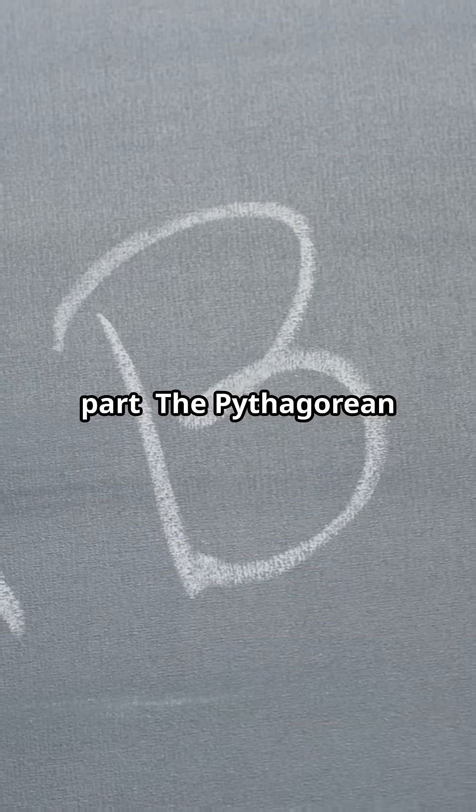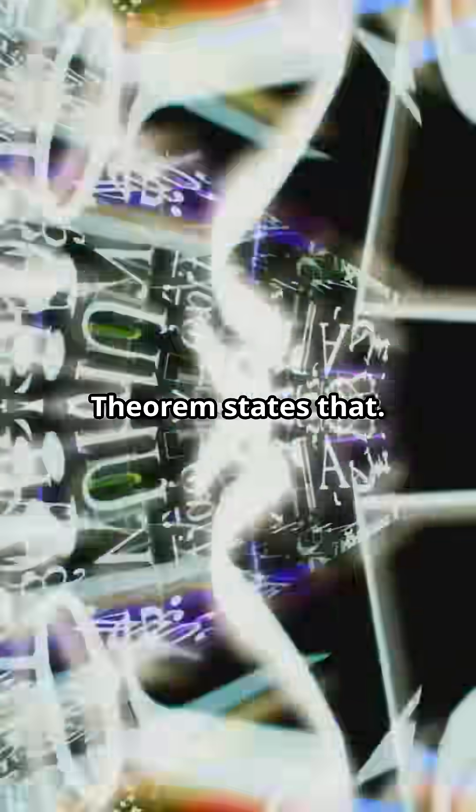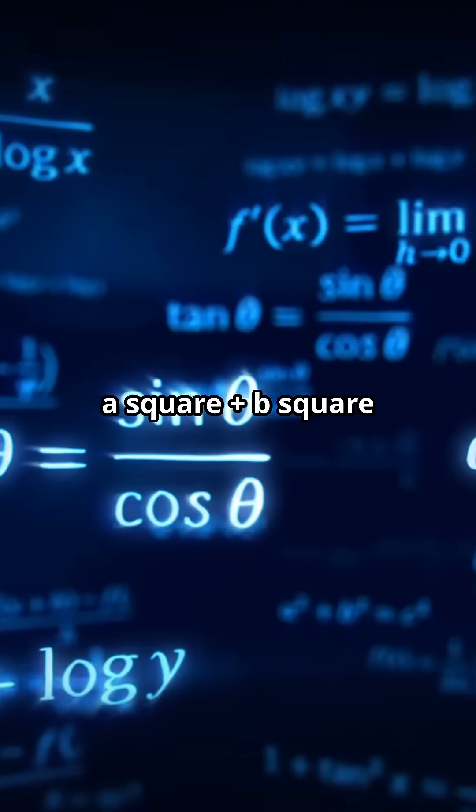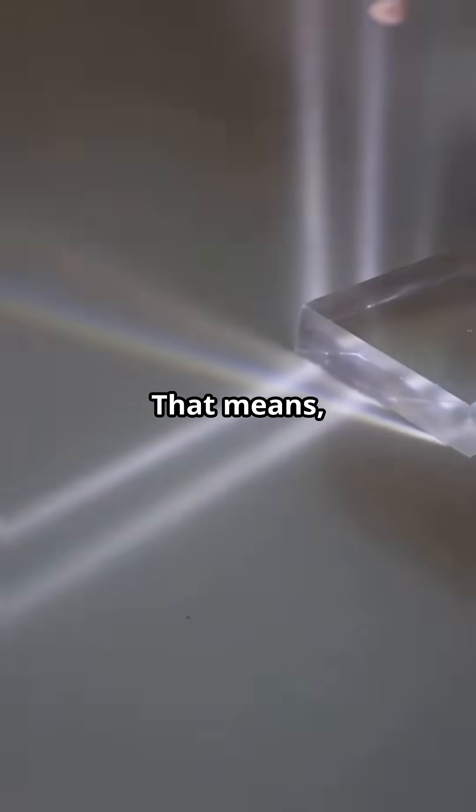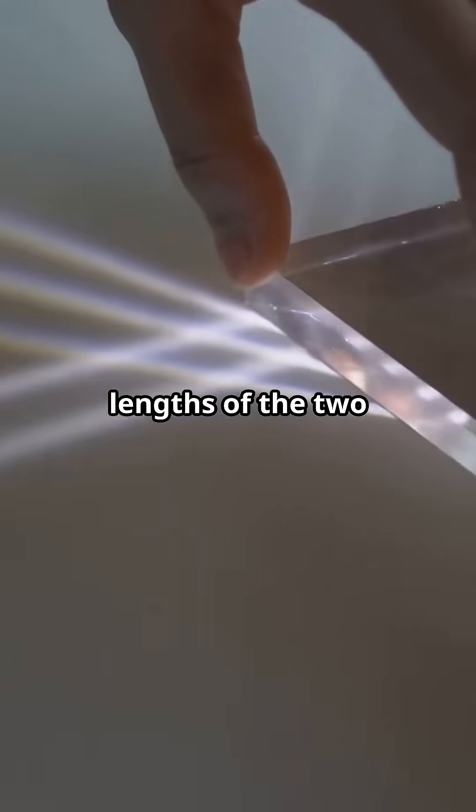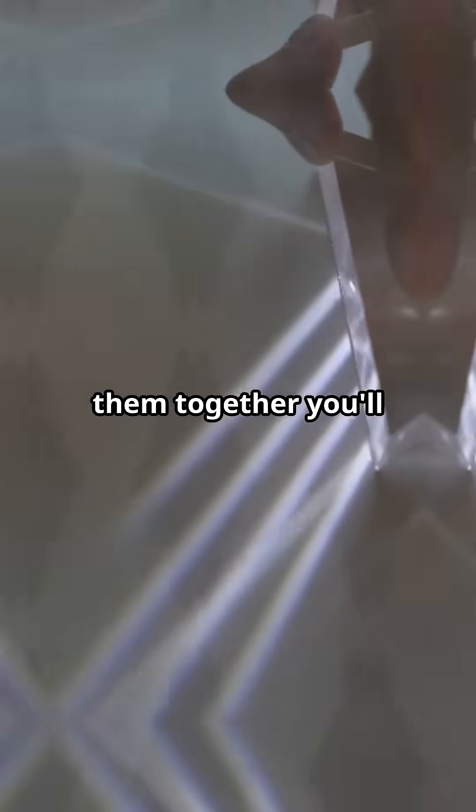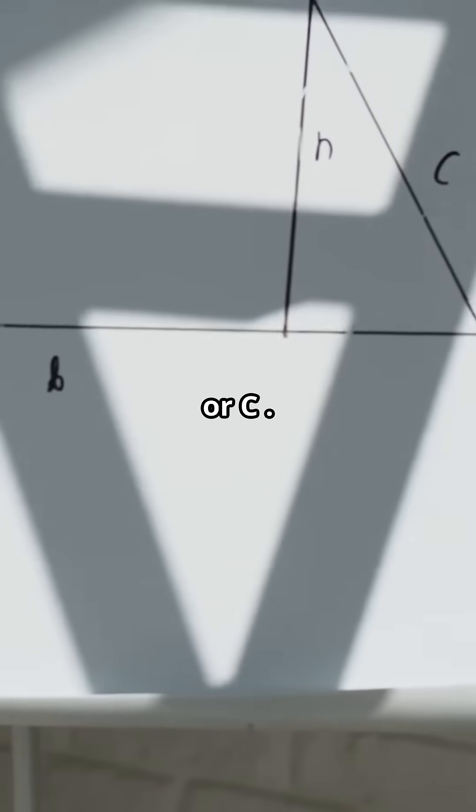Here's the cool part. The Pythagorean theorem states that A² + B² = C². That means if you square the lengths of the two shorter sides and add them together, you'll get the square of the hypotenuse, or C.